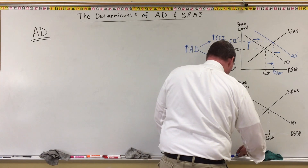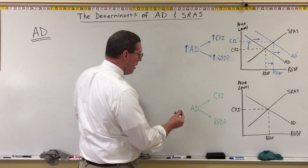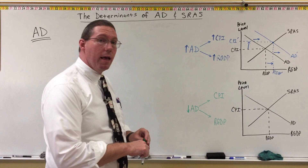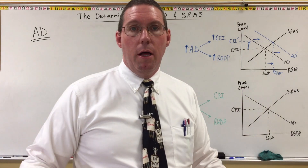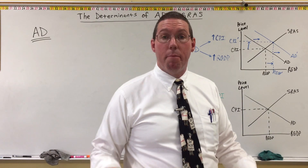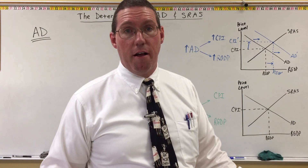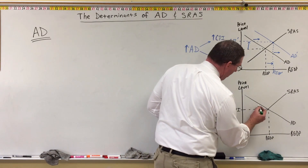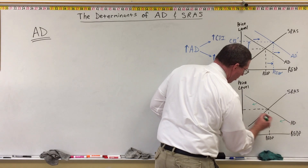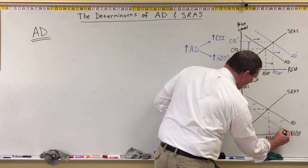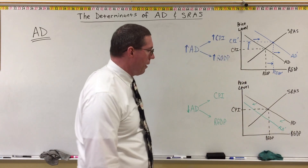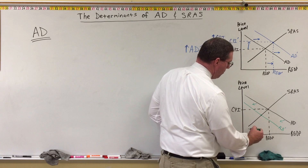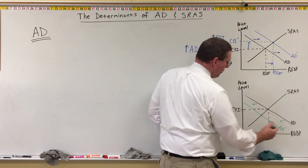Now let's look at the situation where we have a decrease in aggregate demand. If aggregate demand goes down, that means in general people are buying less stuff — businesses are buying less, consumers are buying less, governments are buying less. A decrease in aggregate demand means a leftward shift of the aggregate demand curve, which gives us AD prime — our new aggregate demand curve.